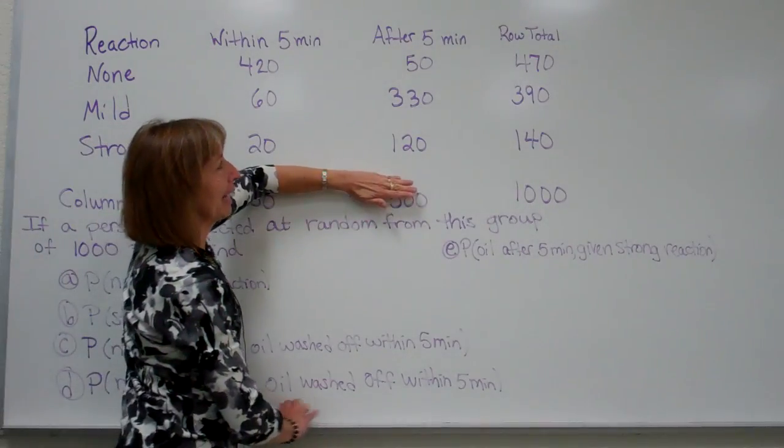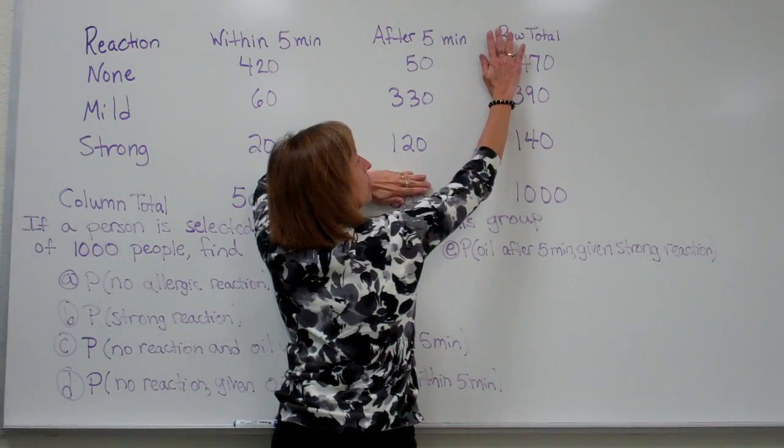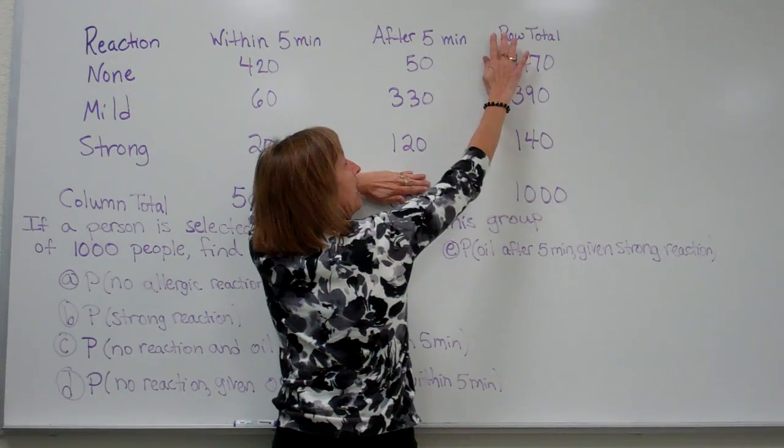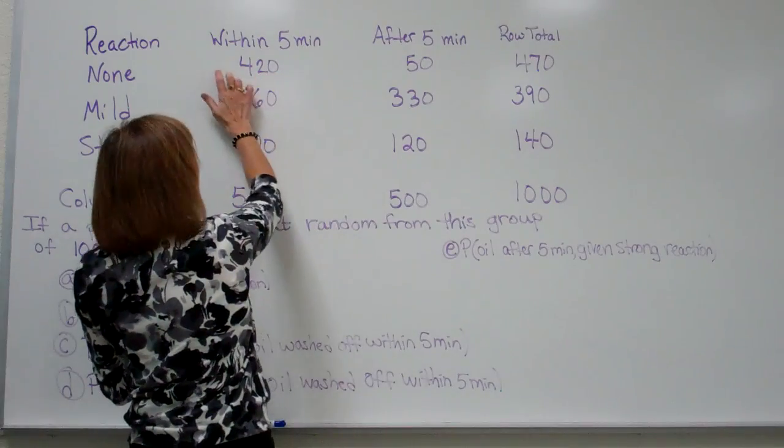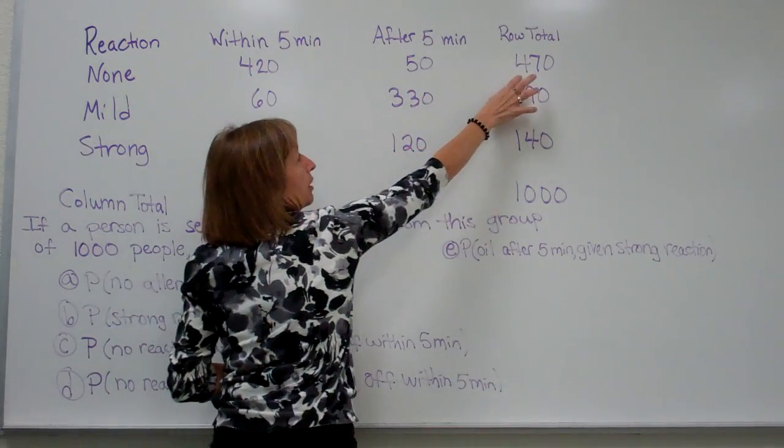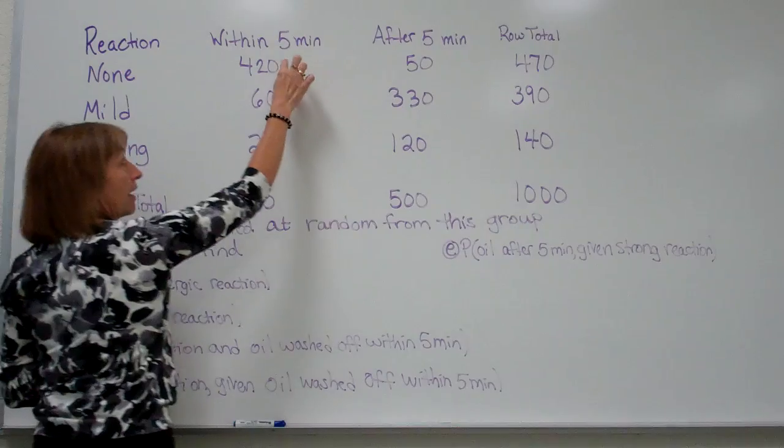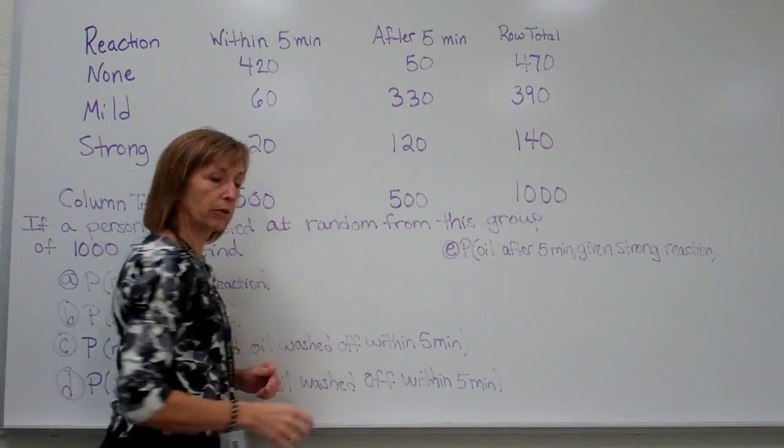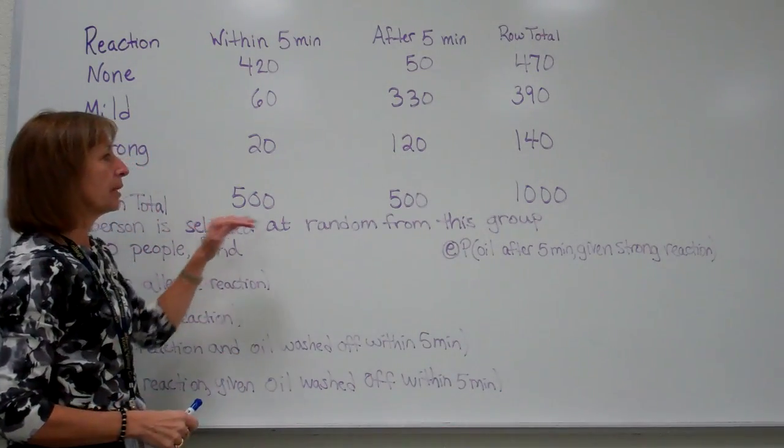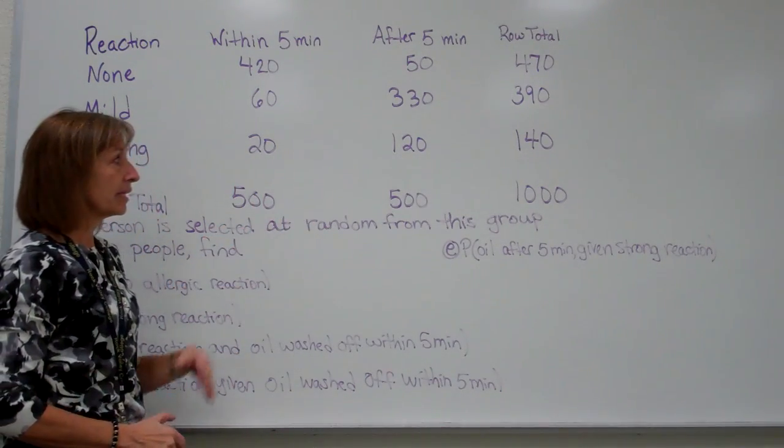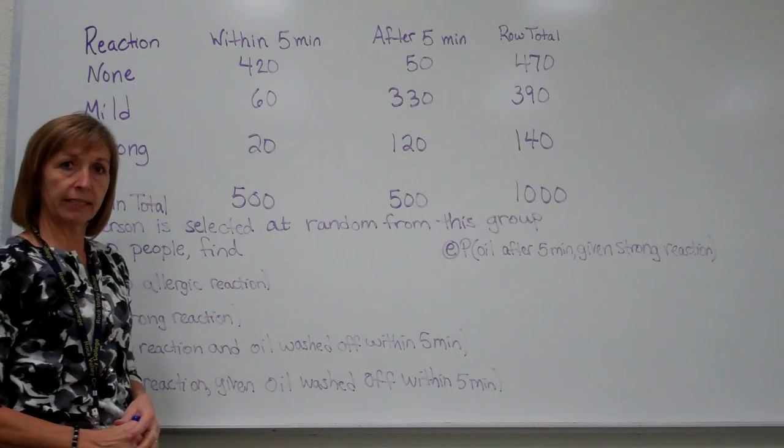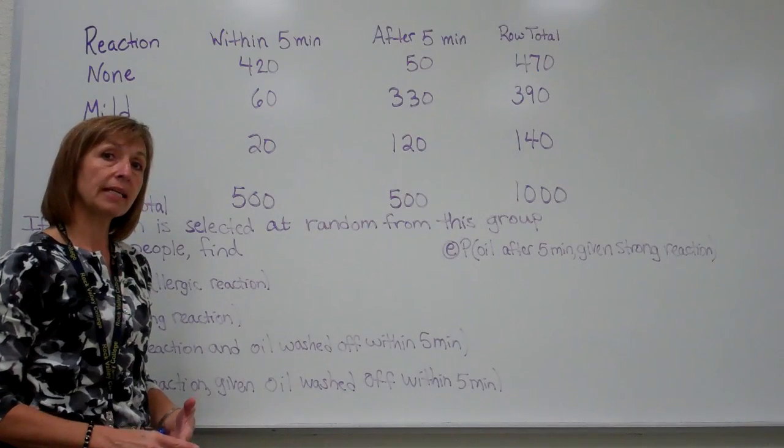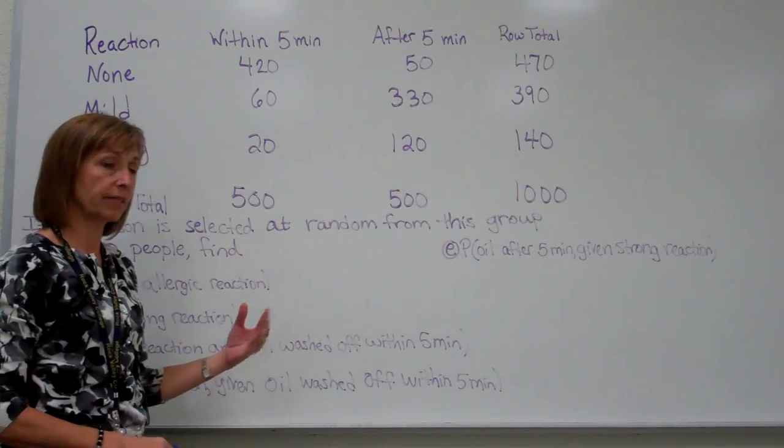Now the table might not have the row or column totals given to you. They might just give the categories and how many fell within each category. If that were the case then it would be your job to add together the rows to get your row total and add together the numbers in the columns to get your column total, and then you'd have your overall number of people in the group that you did the study on. But in this one all of those additions are already done. Now if the information is organized in a table like this, then we can actually answer probability questions just off the table.